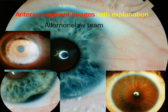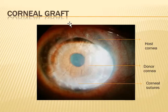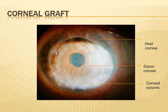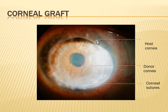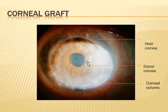Here you can see the limbus, and there is a junction between a clear cornea and some opaque cornea. This is a full thickness corneal graft. This is the host cornea — you can see new vessels, vascularization, and corneal opacities. This is the clear donor cornea, and you can see all the non-absorbable sutures here. The central cornea appears clear.